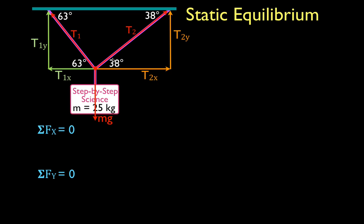The next step is to actually sum up the forces in the x and the y-direction. We have two forces in the x-direction: T2x pointing in the positive direction and T1x pointing in the negative direction. So for the sum of the x-forces, we write T2x minus T1x equals 0. For the forces in the y-direction, we really have three forces. Mg points down, and it is in equilibrium with the y-components of our tension forces, which point in the positive direction. So we write T1y plus T2y minus mg equals 0.